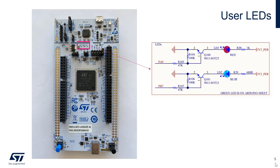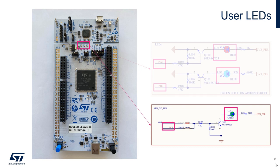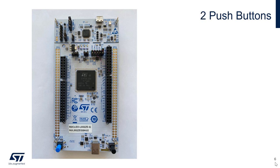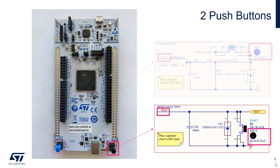There are three user-accessible LEDs on the Nucleo: LD3, a red LED connected to PA9; LD2, a blue LED connected to PB7; and LD1, a green LED connected to PC7. There are two push buttons available on the Nucleo. The blue user button can be accessed through pin PC13, while the black reset button is connected directly to the micro's reset line.